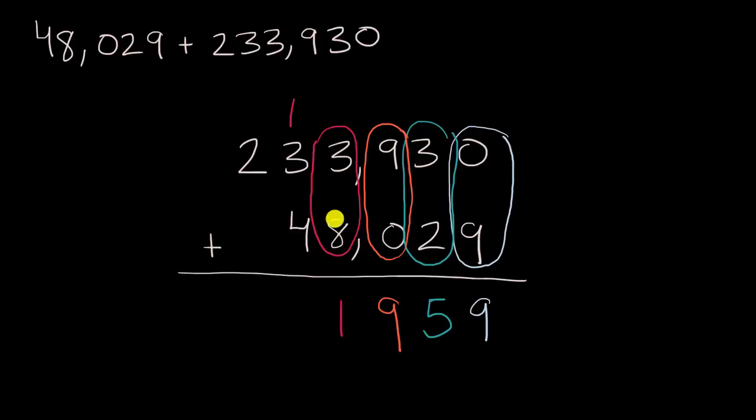3,000 plus 8,000 is 11,000. We write the 1,000 here, and then write the 10,000 in the ten thousands place. Now we have 1 ten thousand plus 3 ten thousands plus 4 ten thousands. So one plus three plus four—that's 8 ten thousands, or 80,000.